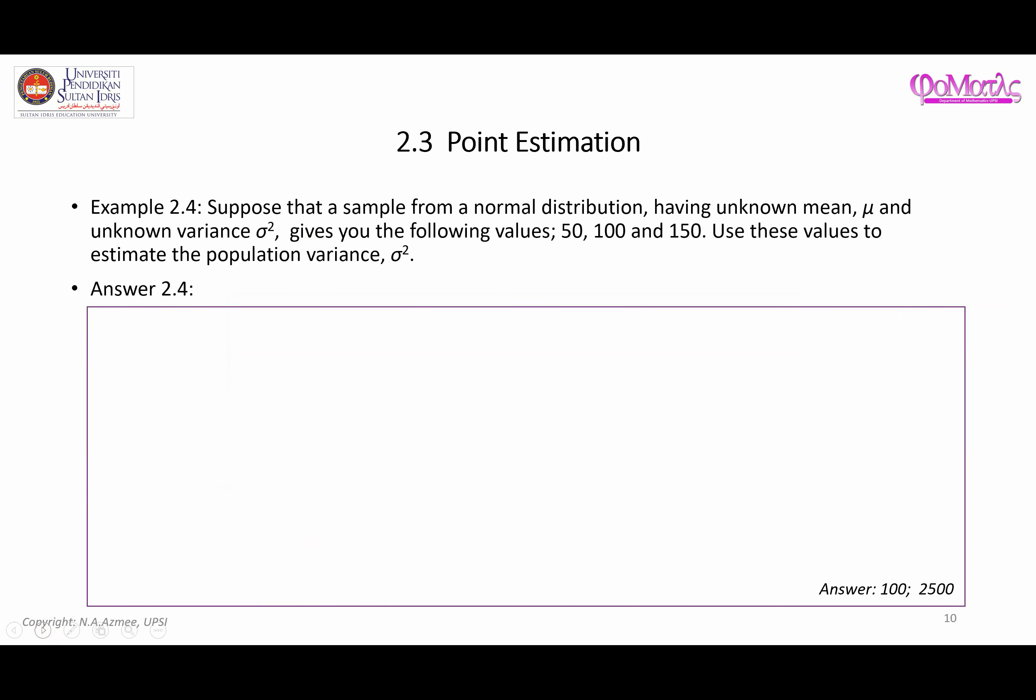Next, let's look at this example. Suppose that a sample from a normal distribution, having an unknown mean. So the population mean is mu, which is unknown, and the population variance is sigma squared, which is also unknown.